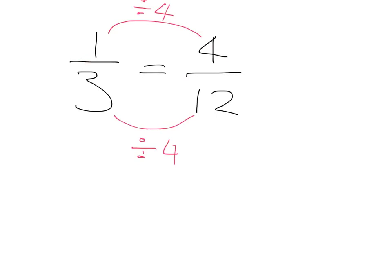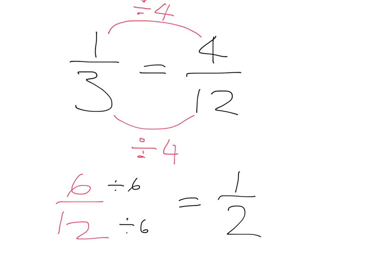If I divide the top of the fraction by four and I divide the bottom of the fraction by four, I'll have an equivalent fraction. Four divided by four gives me one, and twelve divided by four gives me three. So four twelfths and one third are equivalent fractions. What if I was given something like six twelfths — can I find an equivalent fraction that's simpler? I can divide the top and the bottom of this fraction by six. Six divided by six is one, twelve divided by six is two. So six twelfths is equivalent to one half.